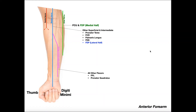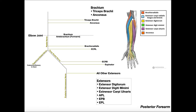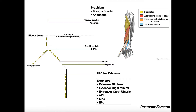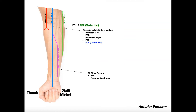Welcome back to Anatomy and Physiology on Catalyst University. In the previous video, we discussed some strategies for really learning the innervation to the muscles in the posterior forearm — the extensor muscles. Now we're going to switch gears and do the anterior forearm musculature.